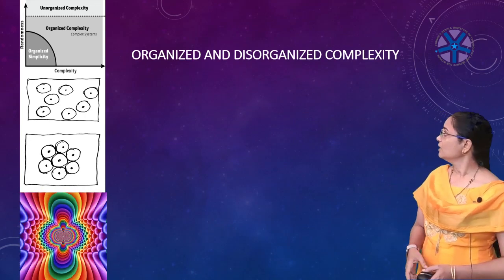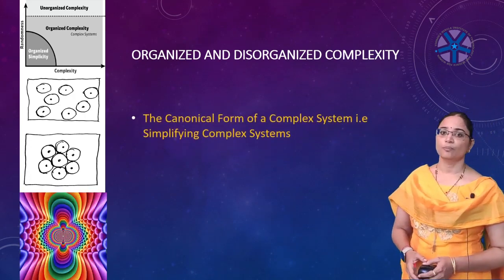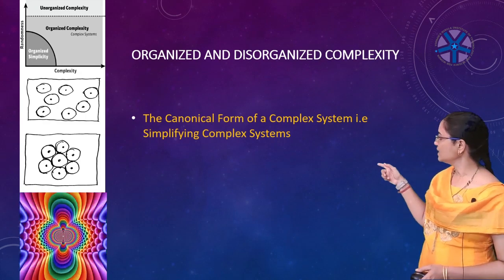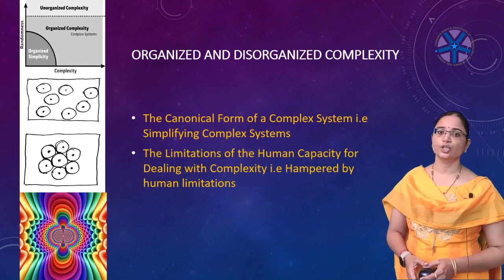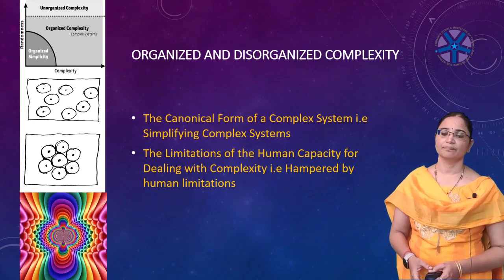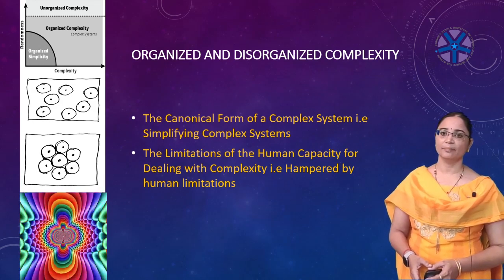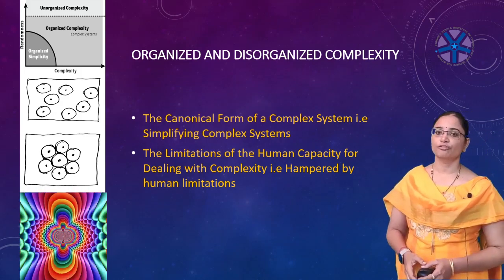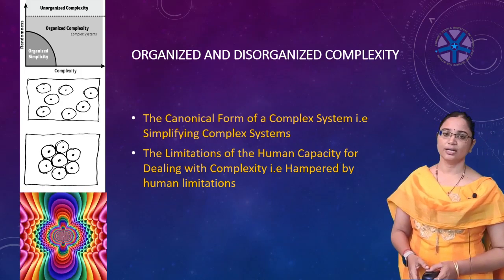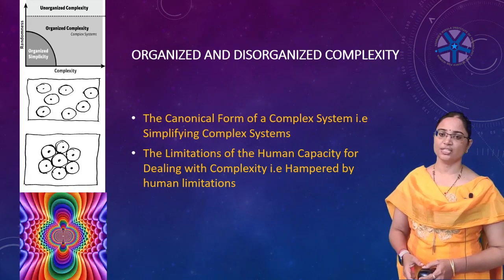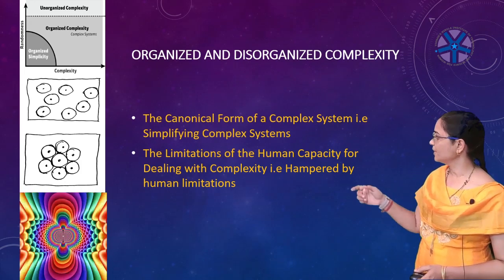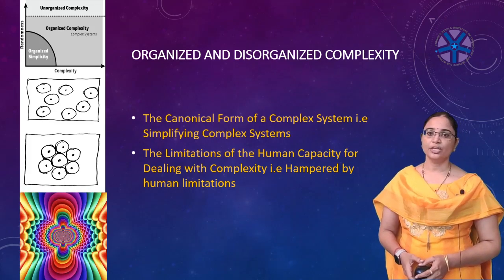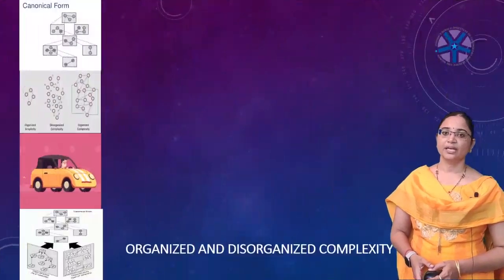The two methods are: the canonical form of the complex system, which means simplifying the complex system, and second, the limitations of the human capacity for dealing with complexity, which means hampered by human limitations. In the PPT you can see figures indicating unorganized complexity, organized complexity, and one more figure indicating complexity overall.